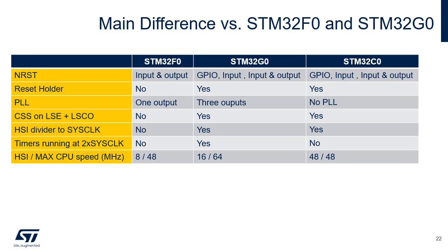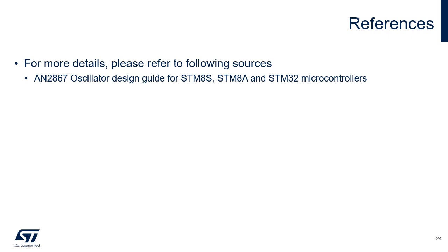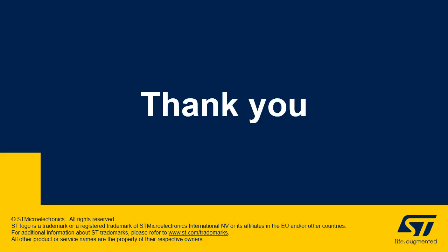Regarding the STM32C0, the timer clock TIMPCLK runs at PCLK frequency if the APB prescaler division factor is set to 1, or twice the PCLK frequency otherwise. So the max frequency of timers is SYSCLK frequency. In addition to this training, you may find the power control and interrupt controller trainings useful. For more details, please refer to application note AN2867, an oscillator design guide for STM8S, STM8A, and STM32 microcontrollers. Thank you for attending this presentation.